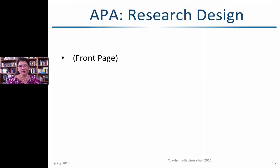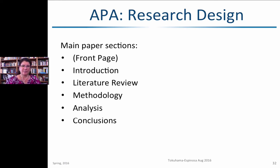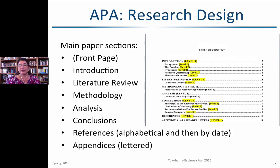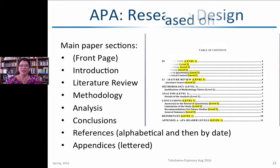That's how we set up an APA paper. For research design, the main sections follow this structure: front page, introduction, literature review, analysis, methodology, conclusions — immediately followed by references — and then the appendix, which is lettered A, B, C, D. If you create Word styles for all of these, you can automatically generate a table of contents with all those structures.